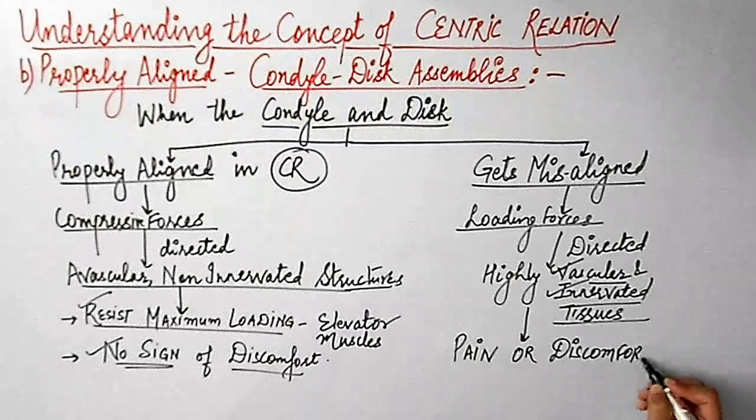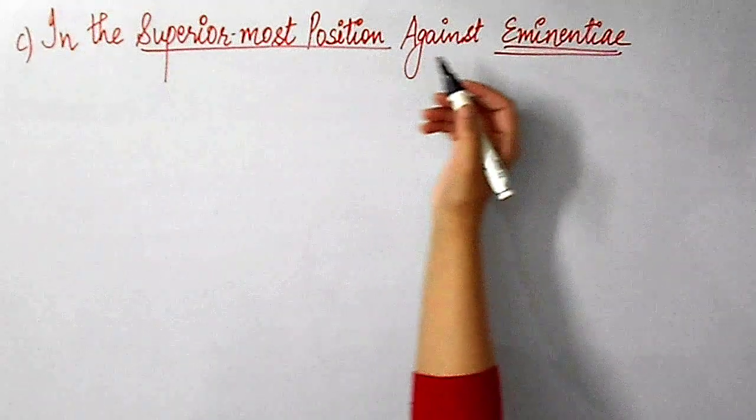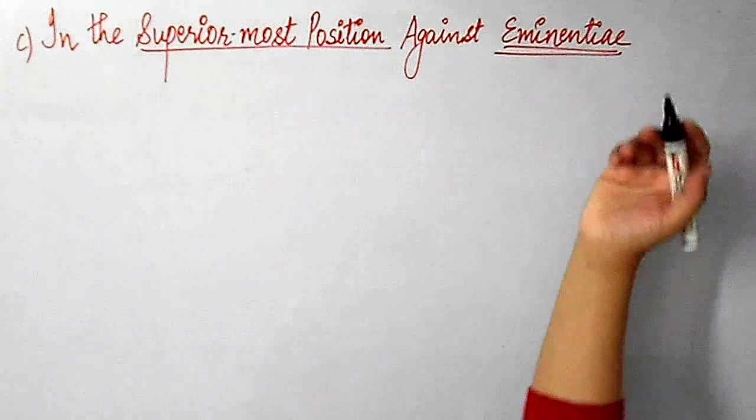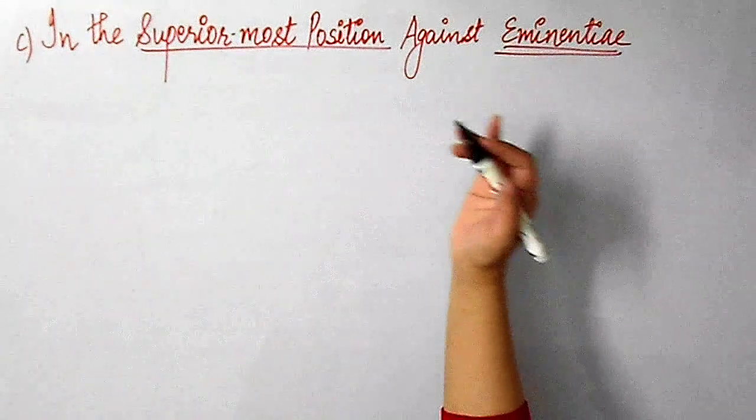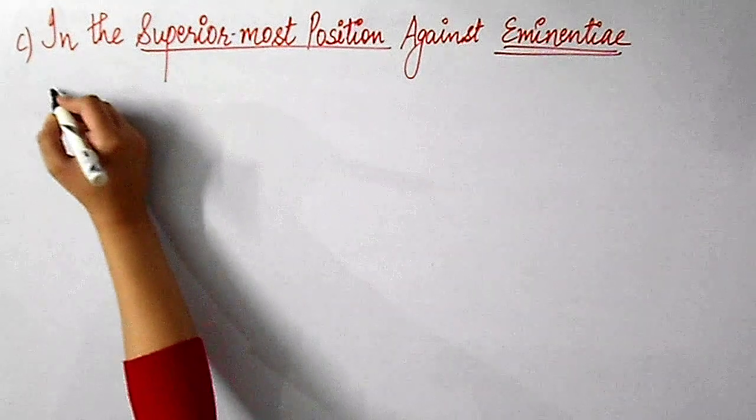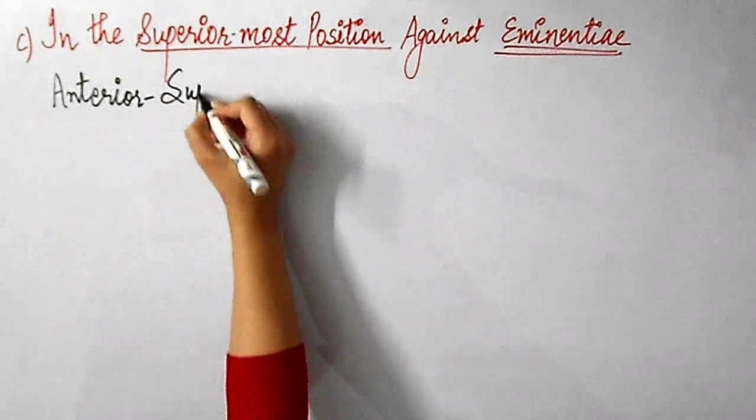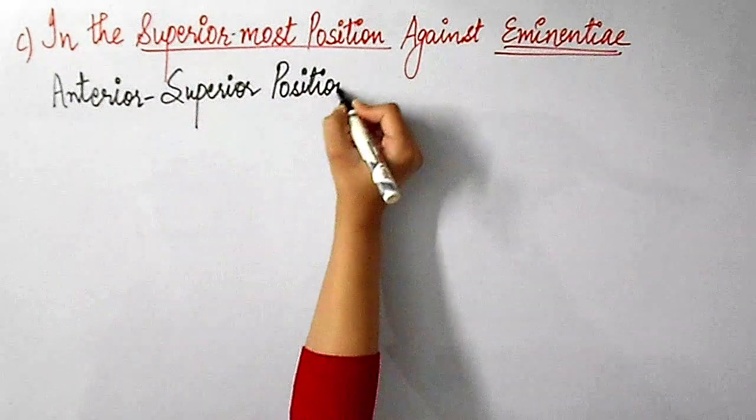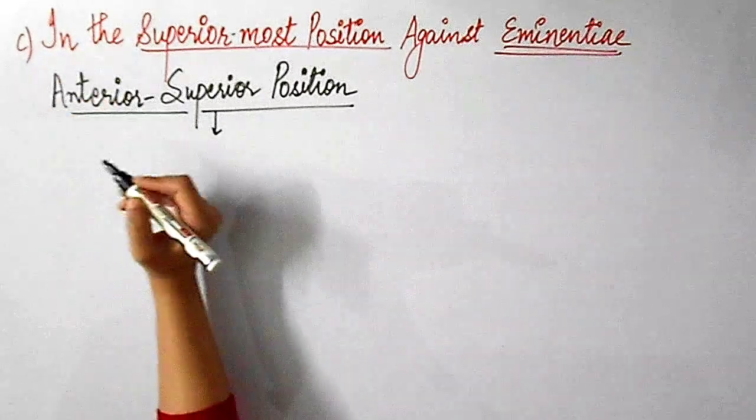Now the next part is that when the condyle disc assemblies are in the superior most position against the eminentia. You'll understand it better with the help of this picture: when the condyles are fully seated, the front of the condyle with the disc interposed contacts against the posterior slopes of their respective articular eminence. The reason for advocating the anterior superior position of the condyle disc assembly is that it is the physiologic position of the condyle when the mandible is elevated firmly by the normal muscle function.